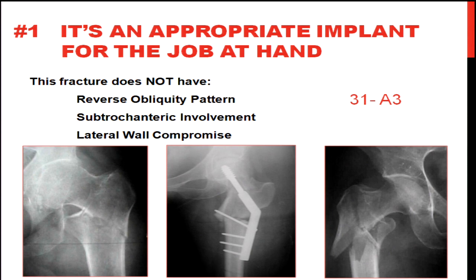Many of us agree that A1s should be treated with a DHS or sliding hip screw. So the question is these A2s, which fall into the middle-of-the-road pattern, and I would offer up that they do have successful outcomes with a conventional sliding hip screw device. When you see the A3 patterns, that's a completely different ballgame — you can see the complexity of the fracture patterns and the poor results achieved with a conventional DHS.